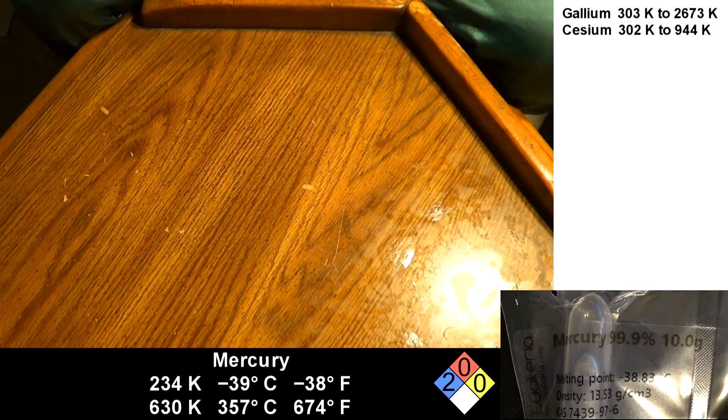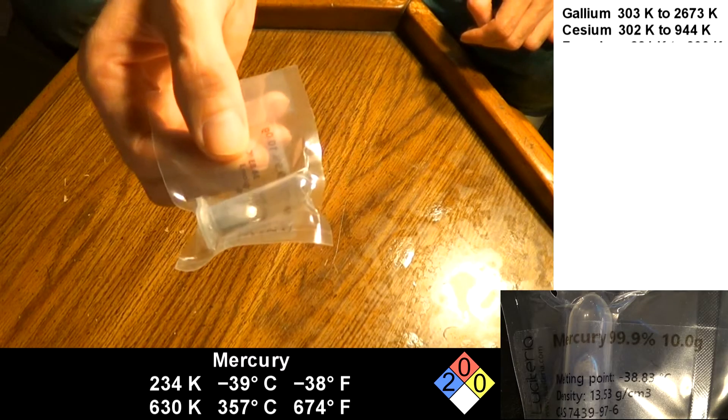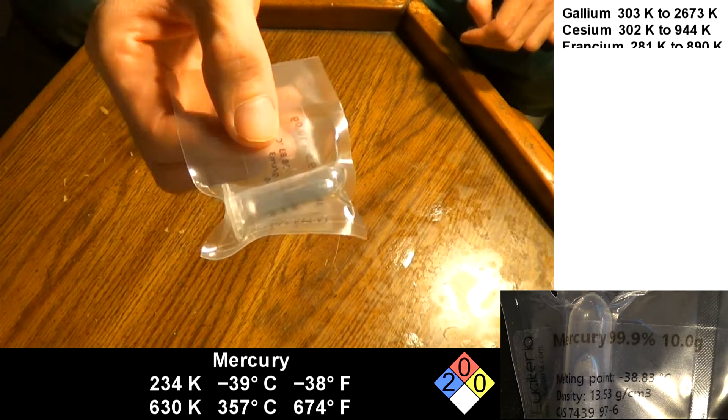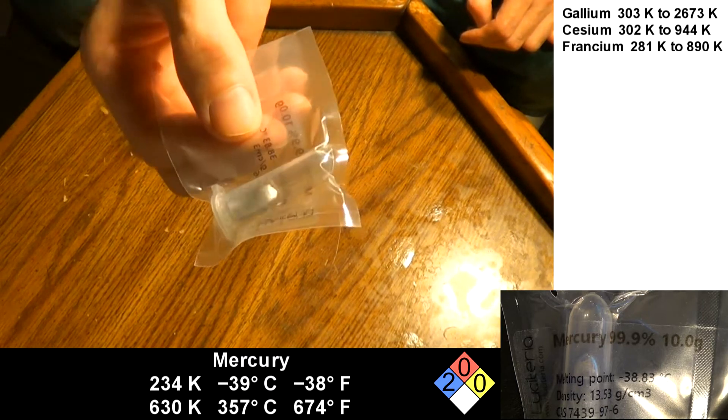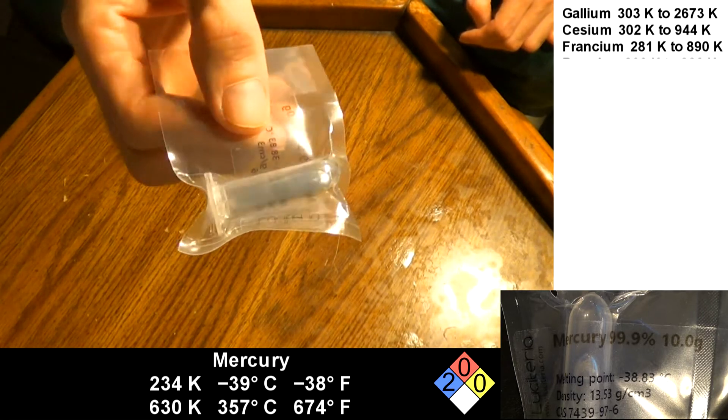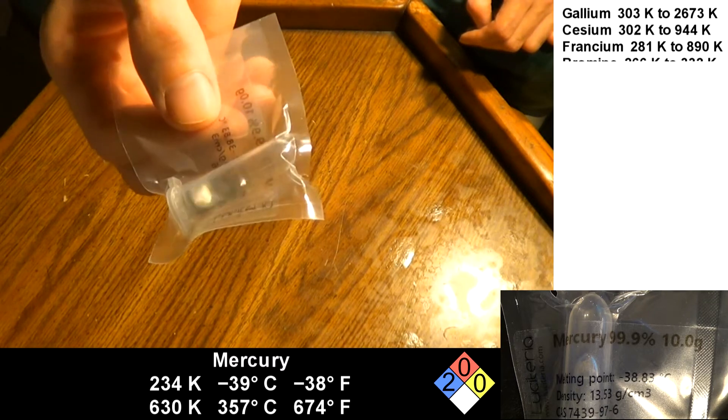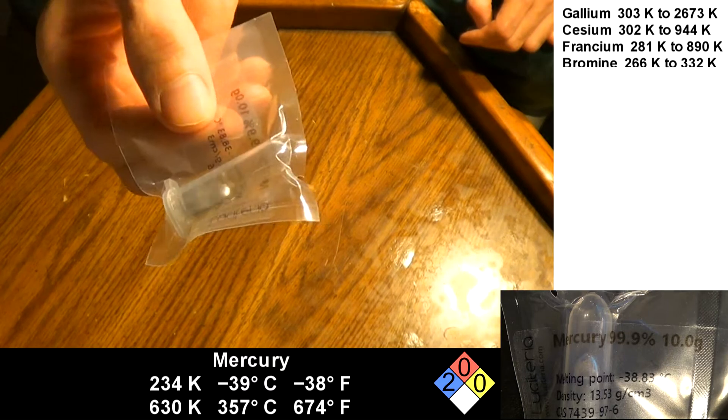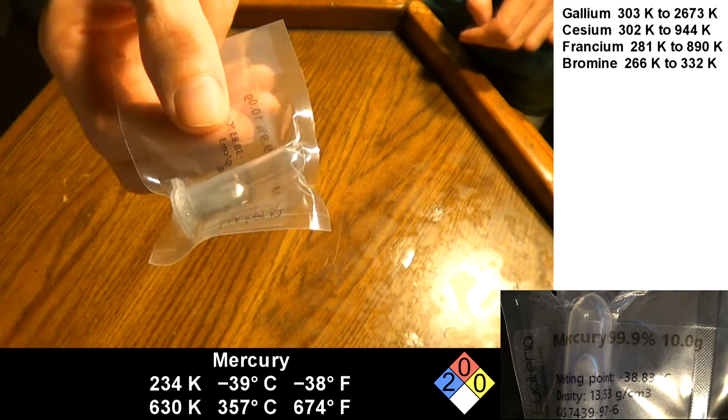Next is mercury. The element, not the planet. As you can see, it's a liquid at room temperature. Mercury is heavier than lead, so this tiny amount weighs 10 grams. Because it's toxic, it's staying in this container inside the plastic bag. It's a liquid from 234 Kelvin to 630 Kelvin.